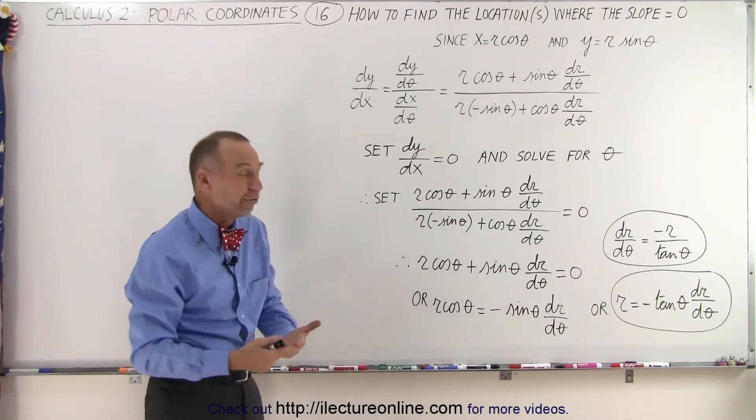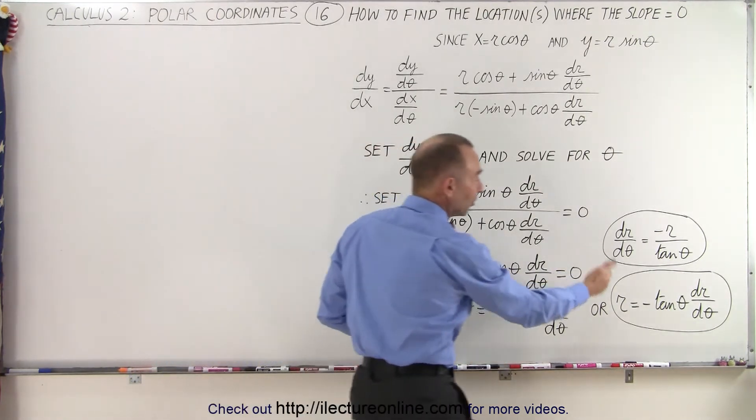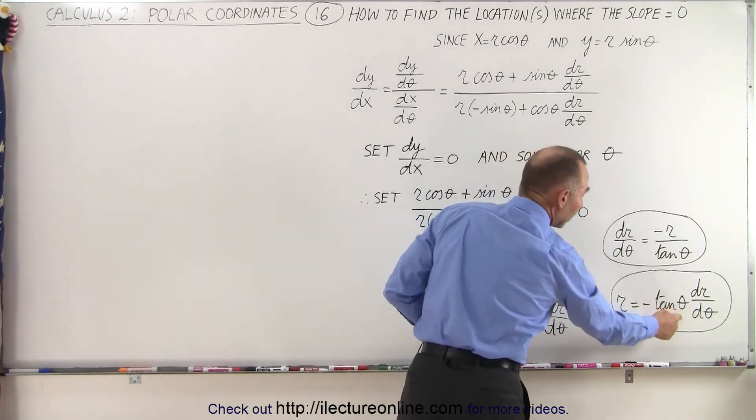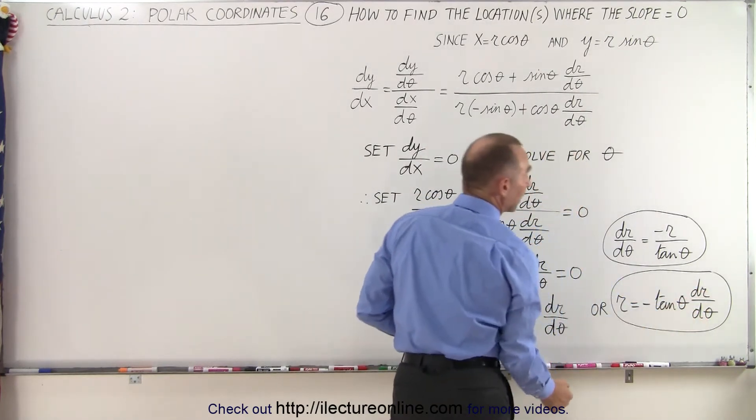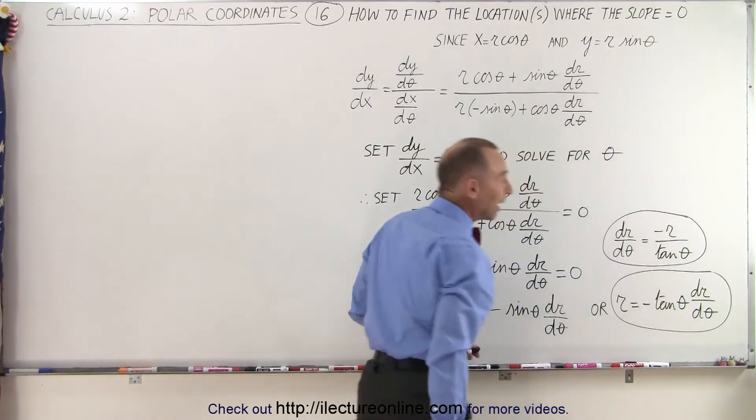And then we can solve for r or dr/dθ. These two expressions now relate r to the angle and to the derivative of r with respect to theta. Or we can write that dr/dθ is equal to minus r over the tangent of theta.